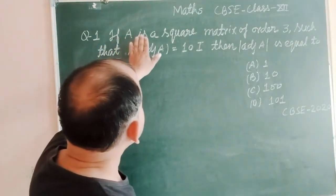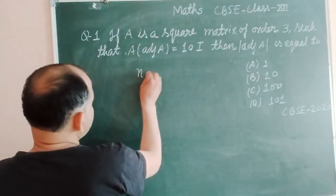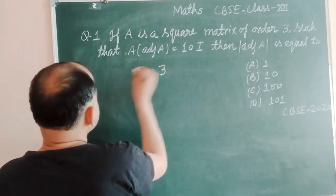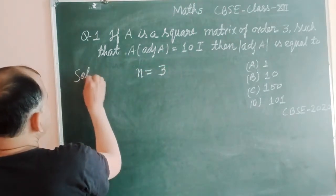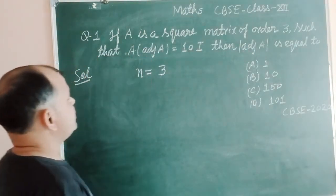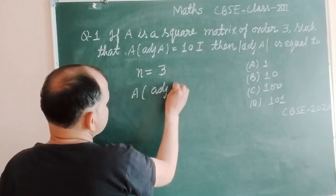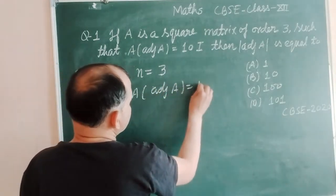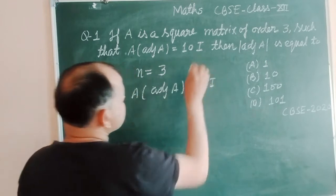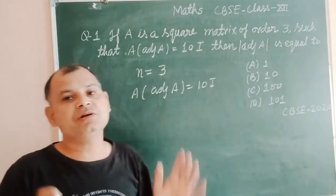Question is: if A is a square matrix of order 3, so order of matrix is given 3, such that A(adj A) = 10I. Then |adj A| is equal to?